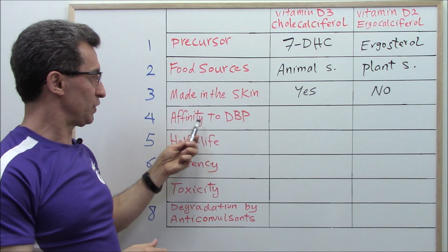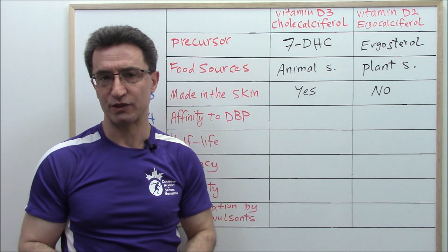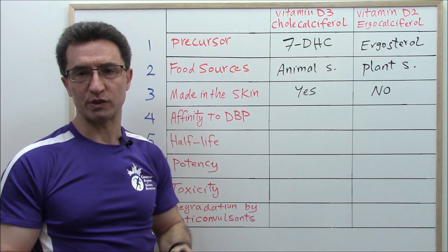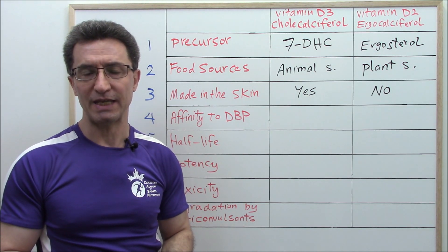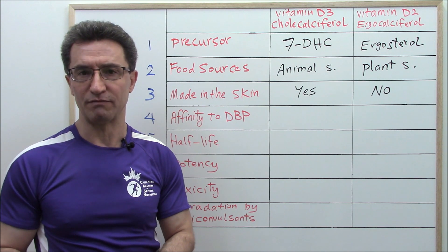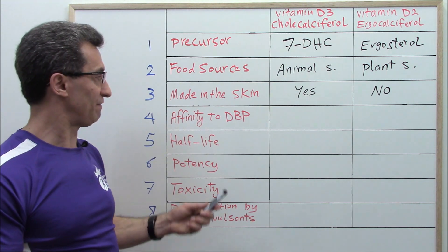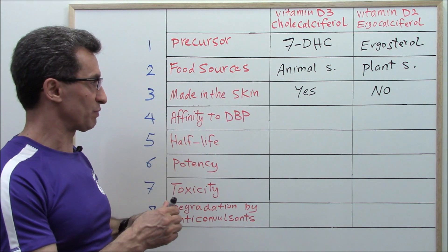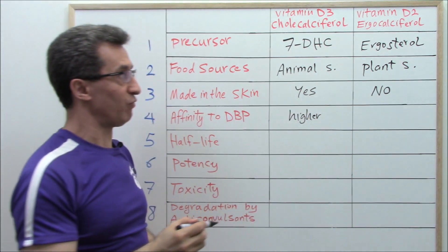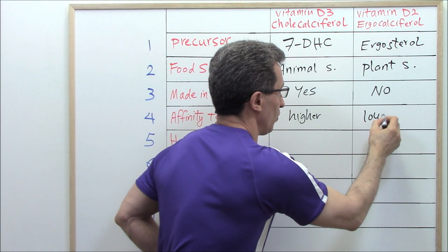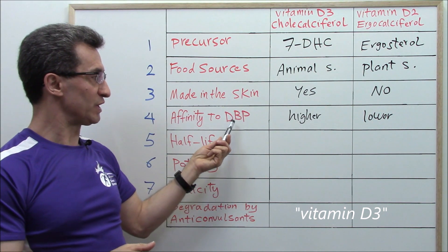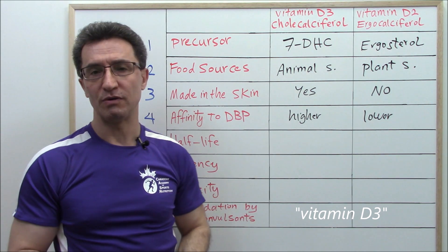Number four: affinity to DBP, which stands for vitamin D binding protein. This is a protein produced by the liver that binds vitamin D and its metabolites and carries them in the body — from the skin to the liver, from the liver to the kidneys, and from the kidneys to other organs. The affinity of vitamin D3 to this protein is higher, but the affinity of vitamin D2 is lower. That means vitamin D3 and its metabolites bind to DBP much better than vitamin D2 and its metabolites.